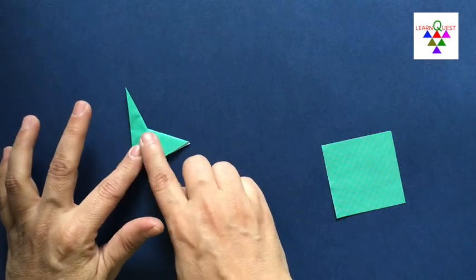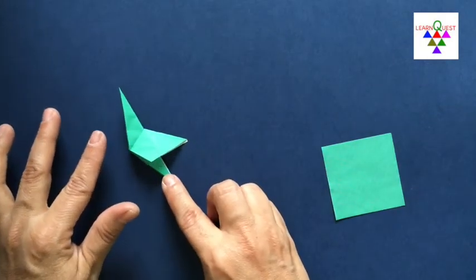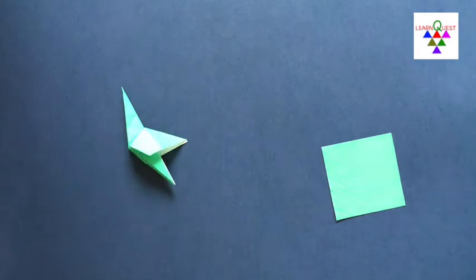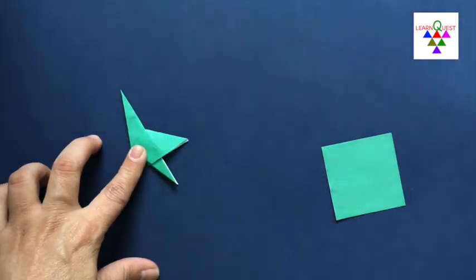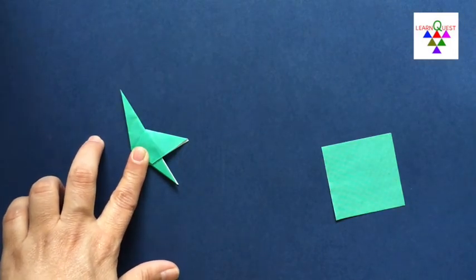So you get a kite over here and a triangle over here. What do you notice about this triangle? What kind of a triangle is it?